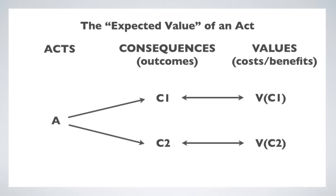The consequences could be: I win the lottery or I don't; it rains on the picnic or it doesn't; she says yes or she says no. Each of these outcomes has a utility or value associated with it, usually positive or negative. If I win the lottery, that's a big positive. If I lose, that's a small negative. If I bring the umbrella and it rains, I don't get wet, which is positive. If I don't bring it and we get wet, that's negative. If she says yes, that's a big positive; if she says no, that's a big negative.